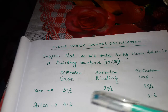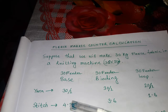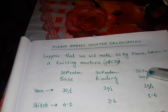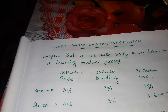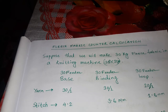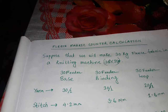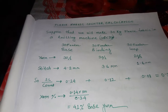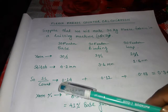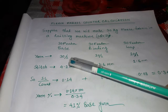For every yarn, the stitch length needed is: base stitch length 4.2 mm, binding stitch length 3.6 mm, and loop stitch length 1.60 mm. Now we calculate the repeating rate of yarn in the machine — stitch length divided by count.